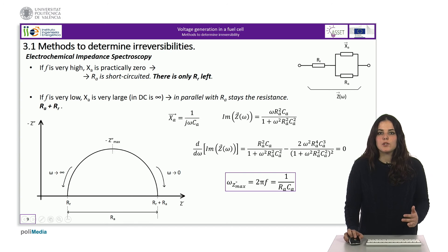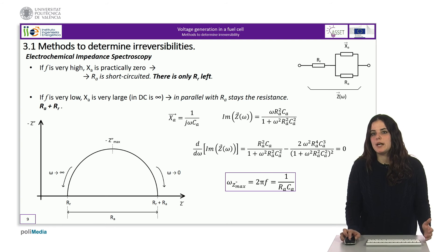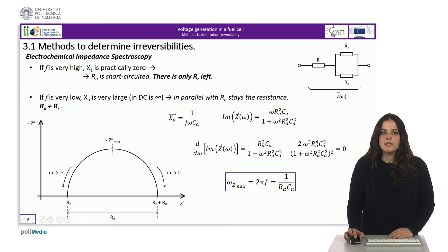Finally, we can also measure from the diagram what is the maximum imaginary impedance. This maximum point can be obtained by deriving the expression of the imaginary part with respect to the frequency and then equaling to zero. The result is that the pulse at which the maximum imaginary part is produced is one over R A times C A. And therefore, as we have the frequency at which this impedance has been produced, we can calculate directly the value of C A.